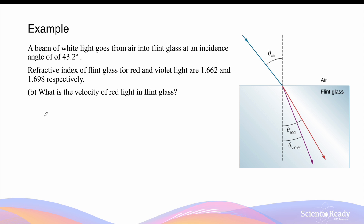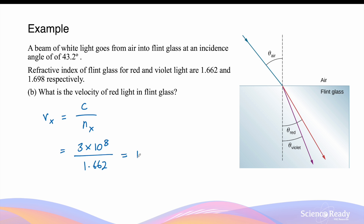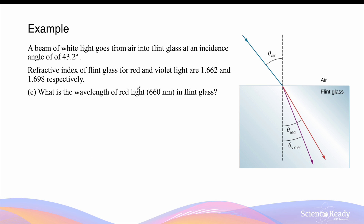Next, what is the velocity of red light in the flint glass? The velocity in the new medium is equal to the speed in the original medium divided by the refractive index of the new medium for that color. Assuming the speed of light in air is 3 × 10⁸ m/s, dividing by the refractive index of 1.662 gives a value of about 1.81 × 10⁸ m/s.